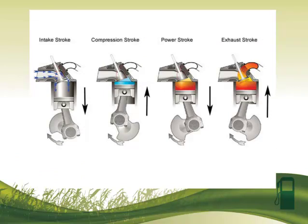In those four strokes, the cylinder pulls in an air and fuel mixture. It compresses it on the second stroke. Then we move to the power stroke where we have a spark and that fuel ignites, followed by the exhaust stroke where we're pushing the exhaust gases out. If you could imagine a situation where as we compress that fuel, that fuel spontaneously ignited — we would get knocking and pinging. What we need is a fuel that can withstand the compression and only ignite at the time that it is sparked.